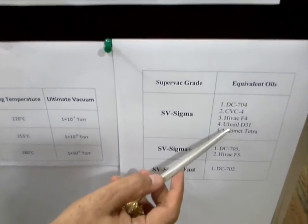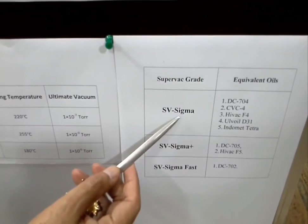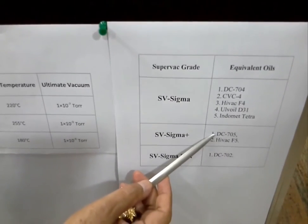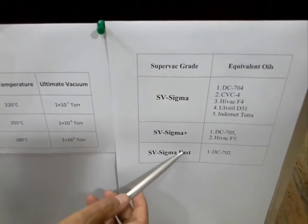This understanding of boiling temperature gives us another advantage. Suppose a manufacturer is charging you very high for a diffusion pump oil, or the oil recommended by the manufacturer is not available in your country or region. You can always choose an equivalent diffusion pump oil based on the boiling temperature being recommended to you. For example, if you are using any of these oils — DC704, CVC4, Hivac F4, ULVAC — you could use SV Sigma Fast. These oils will give all the same working parameters: vacuum level, working life, vacuum everything, but they will be cheaper — some much cheaper.